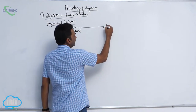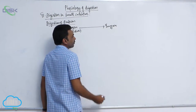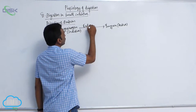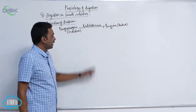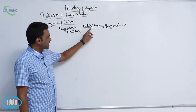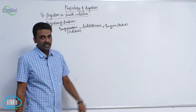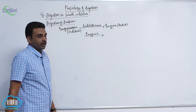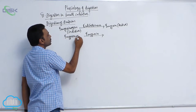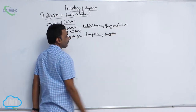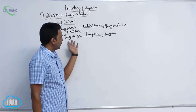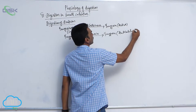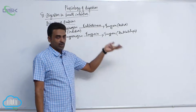Trypsinogen is activated into trypsin by an enzyme called enterokinase, which is produced in intestinal juice. Enterokinase activates trypsinogen to trypsin. The initially formed trypsin then converts the remaining trypsinogen to trypsin — this is called autocatalysis. Just as pepsin underwent autocatalysis, trypsin also undergoes autocatalysis.